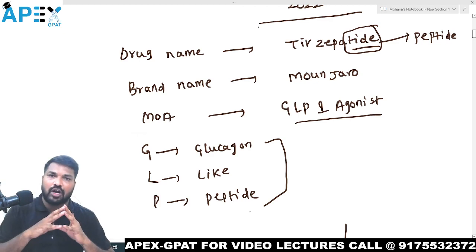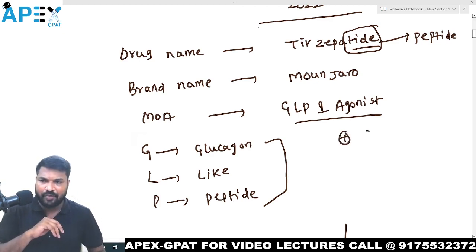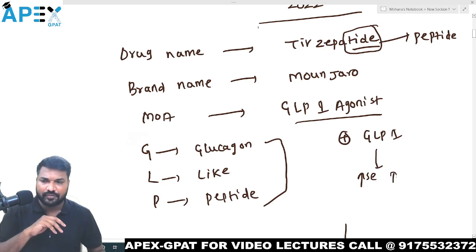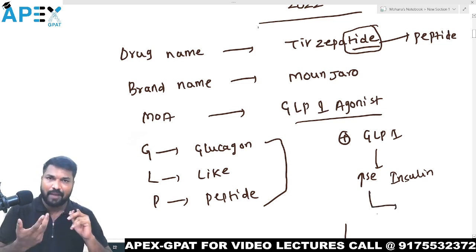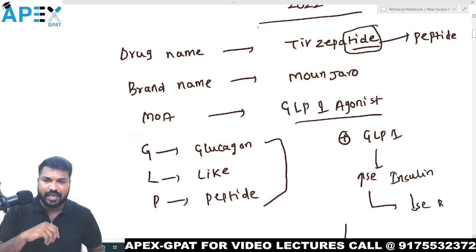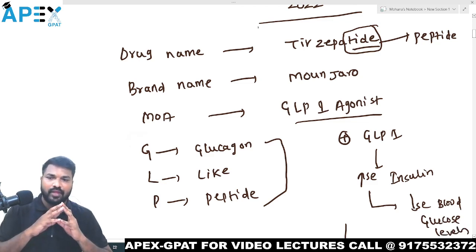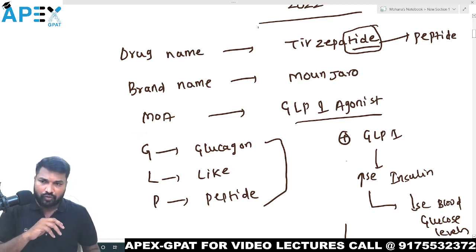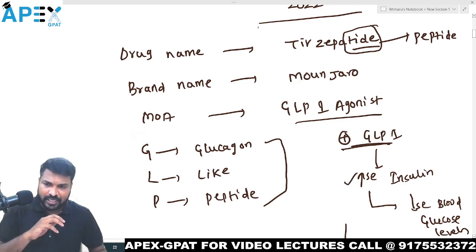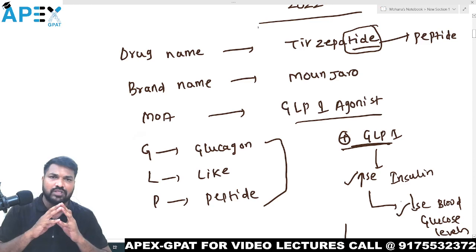What is the function of glucagon-like peptide-1? Whenever we stimulate GLP-1, it increases insulin secretion. When insulin secretion is increased, it decreases blood glucose levels. Insulin decreases blood glucose levels, so this can be used in the treatment of hyperglycemia — simply, diabetes.